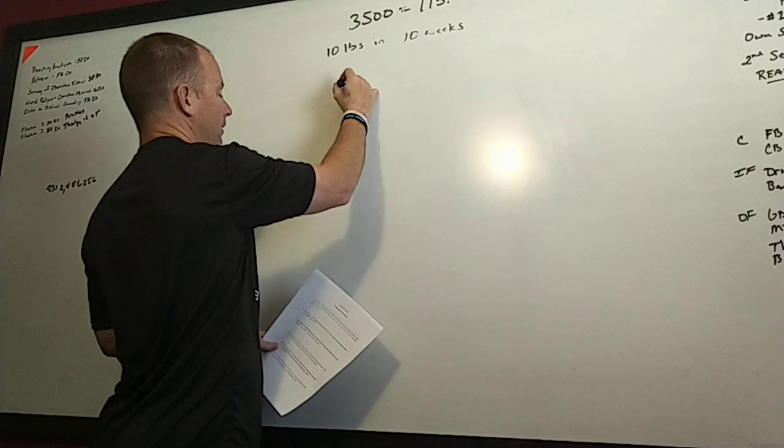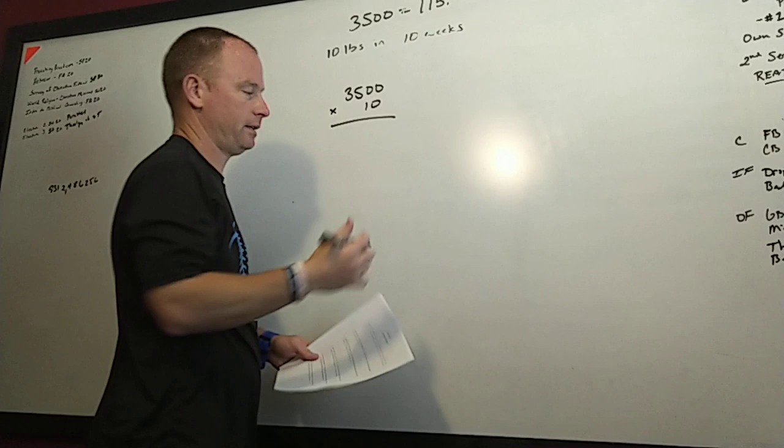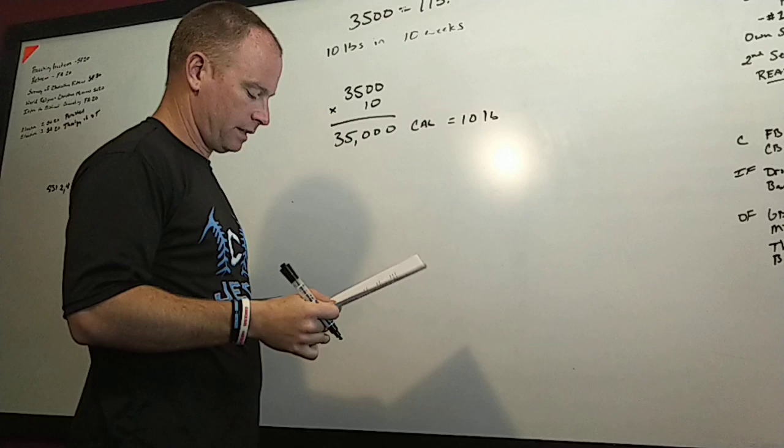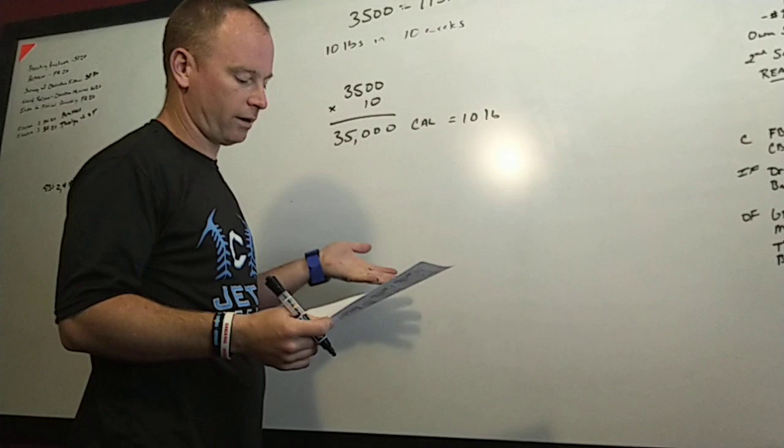It says Ruth desires to lose 10 pounds in 10 weeks. How many calories are equivalent to 10 pounds? Again, we've got to know 3,500 is equal to one pound. So 3,500 times 10, we just add the zero, right? That's going to give us 35,000. So 35,000 calories equals 10 pounds.